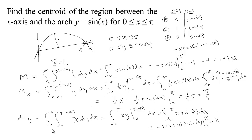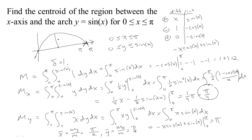Now we can find the centroid. x-bar = M_y / m = π / 2 = π/2. And y-bar = M_x / m = (π/4) / 2 = π/8. This is what we expect: because of the symmetry of the sine arch around the line x = π/2 with constant density, x-bar should be π/2. And y-bar = π/8. So our centroid is at (π/2, π/8).